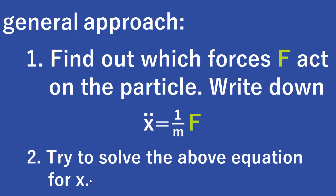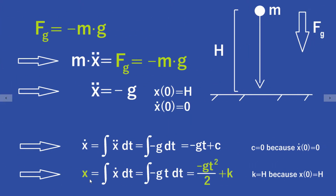Let's take a look at some examples. The first one is the particle that falls down from a height h only under the influence of gravitation. The only force that has an influence on the particle is the gravitation. The gravitational force is directed downwards, so we get for the gravitational force that it equals minus the mass of the particle times the gravitational constant.